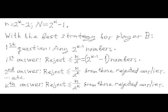We have set capital N to 2^K minus 1. Since this is an odd number, the best player B can do is to partition it into two uneven sets: one with 2^(K−1) numbers and the other with 2^(K−1) minus 1 numbers. Player A should reject the smaller part. In general, the strategy of player A is to minimize the number of rejected numbers. This number 2^(K−1) is exactly one half of n, since we have set n to 2^K minus 2. So in all subsequent answers, player A will ensure that the number of rejected numbers is not greater than n/2, then n/4, and so on, all the way down to n divided by 2^K.